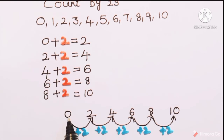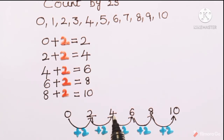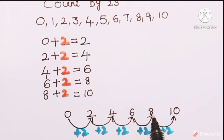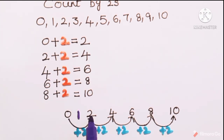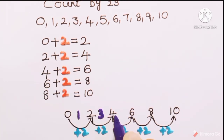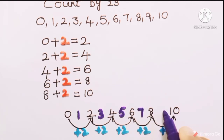In skip counting we directly jump from the number 0 to 2, then from 2 to 4, from 4 to 6, from 6 to 8, and to 10. In between 0 and 2, the number 1 comes. Between 2 and 4 is 3, between 4 and 6 is 5, between 6 and 8 is 7, and between 8 and 10 is 9. In skip counting by twos, we skip one number at each jump.